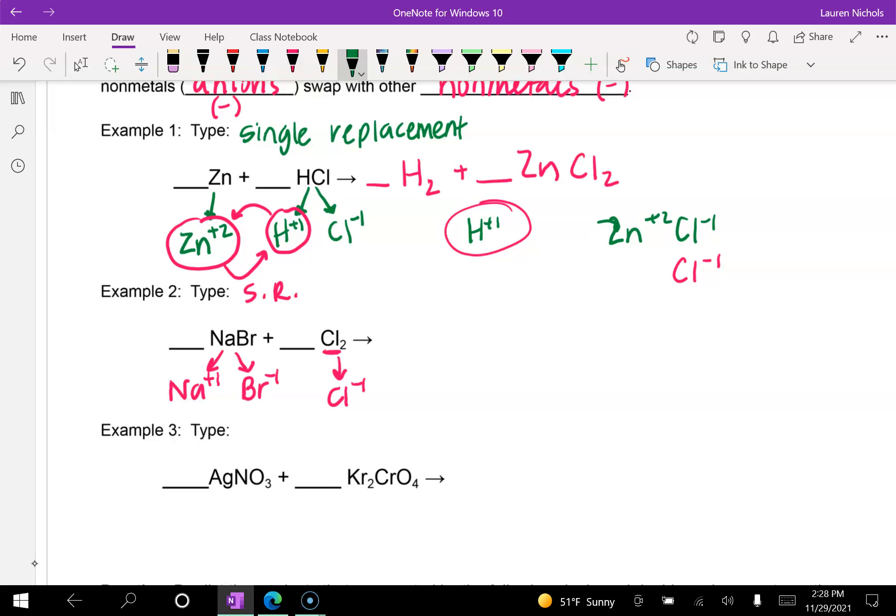Now, earlier, our single element zinc was positive. So it traded places with a positive. But now our single replacement is negative. So it's going to trade places with bromine, which is also negative. So now we're going to have Na plus one with Cl minus one. And then bromine minus one is all by itself.